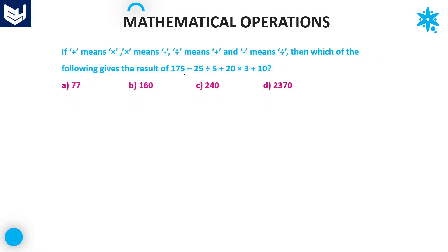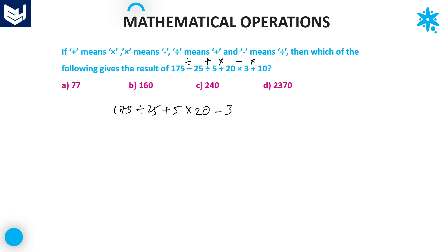Let's move on to the next question. Here is a given expression where plus means into, into means minus, divided by means plus, and minus means divided by. We need to find the result. First, interchange the signs: minus becomes divided by, divided by becomes plus, plus becomes into, into becomes minus. The new expression is: 175 divided by 25 plus 5 into 20 minus 3 into 10.